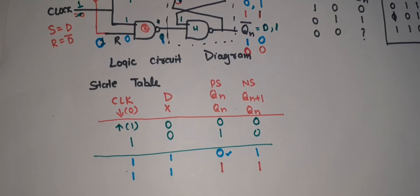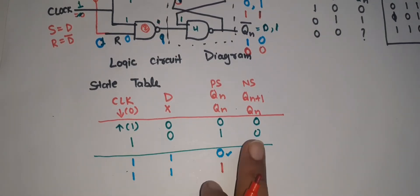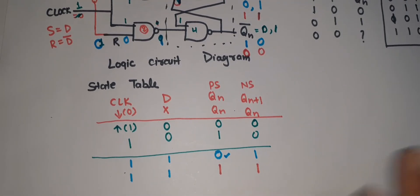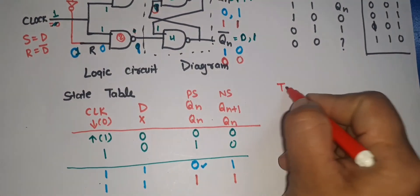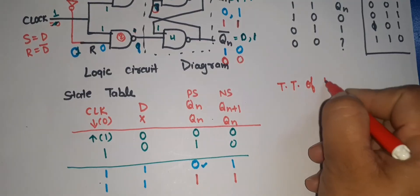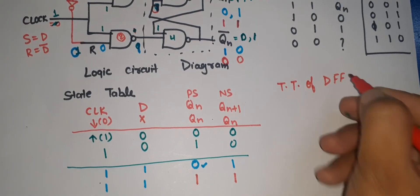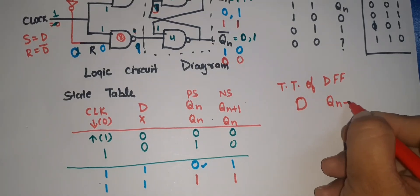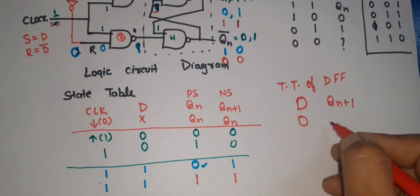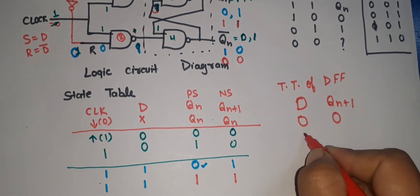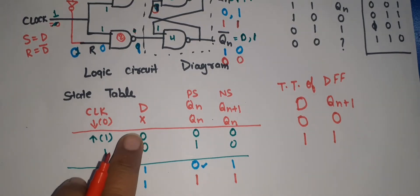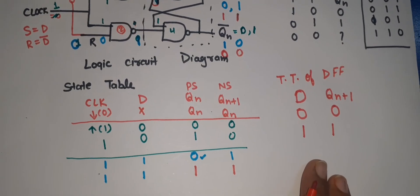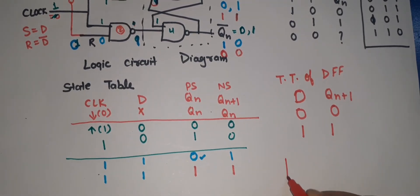From the state table, we can clearly see: when D equals zero, Qn+1 equals zero; when D equals one, Qn+1 equals one. So now we can draw the truth table of the D flip-flop. The truth table is: if D equals zero then Qn+1 is zero; if D equals one then Qn+1 is one. Now let's draw the characteristic equation for Qn+1.